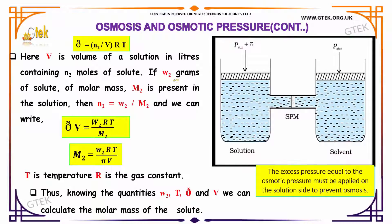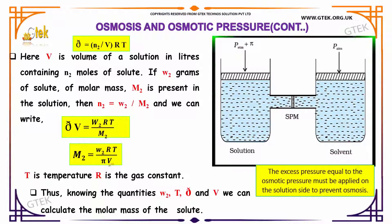If W₂ grams of solute of molar mass M₂ is present in the solution, then N₂ = W₂ / M₂. This can be written as π × V = (W₂ × RT) / M₂, and therefore M₂ = (W₂ × RT) / (π × V), where T is the temperature and R is the gas constant.